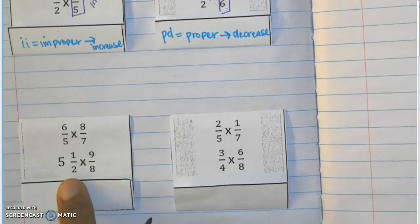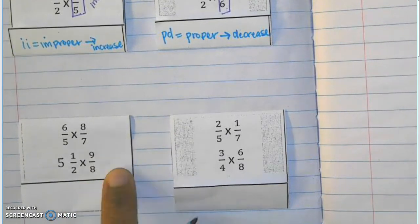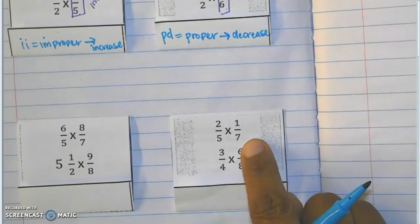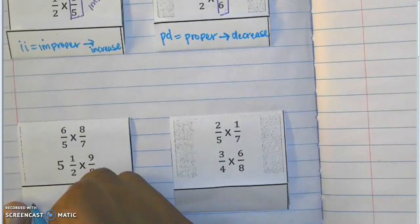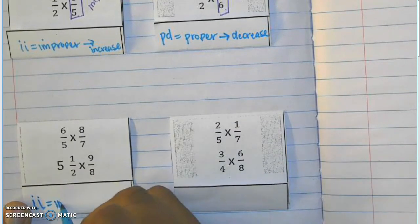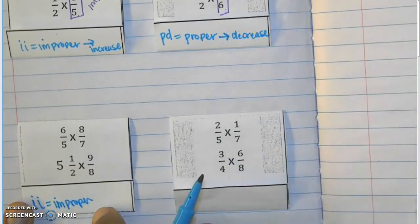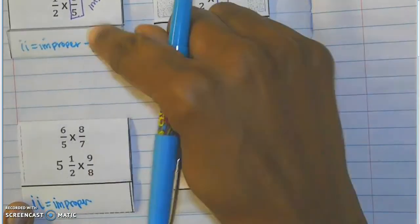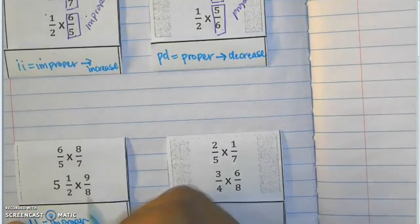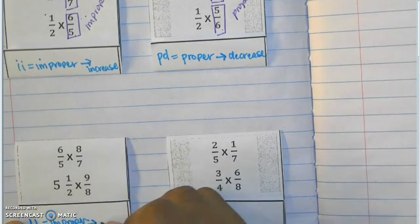When I multiply these together, my answer is going to be greater than both of the initial factors I used. Same thing here: five and one-half times nine-eighths — my product would be greater. This is an II, an improper increase. When they are improper, the answer is going to increase. In this situation, the answer is going to be greater than either factor, and in this situation, the answer is going to be greater than the initial quantity, but still an increase.